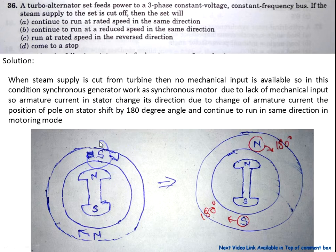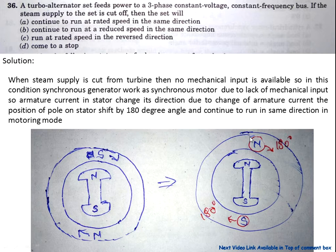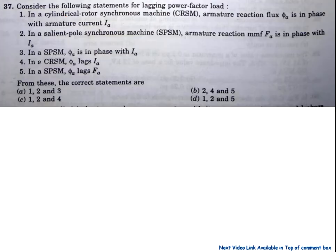This is the stator pole. If the current direction is changed, then S is changed to N and N is changed to S. When N and S are changed, for synchronization between the rotor and the stator, this field is shifted by 180 degrees and continues to run in the same direction. So option A is correct.